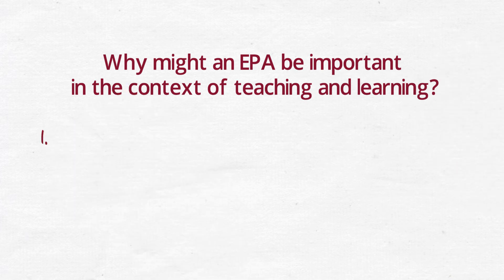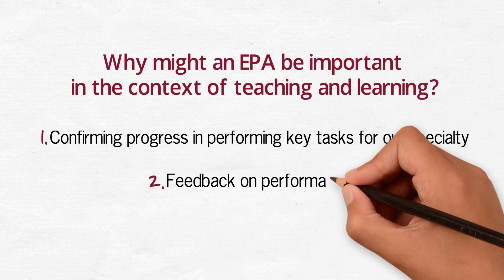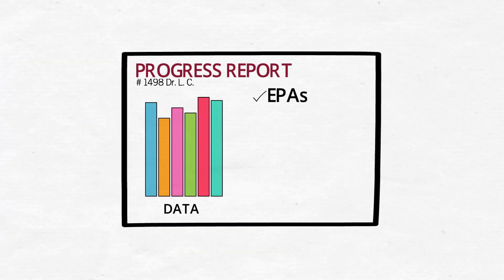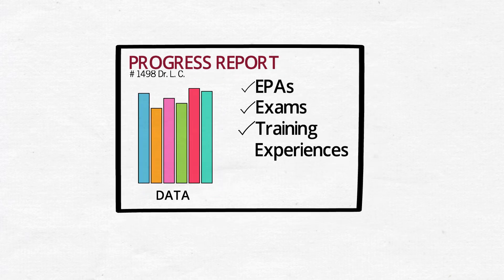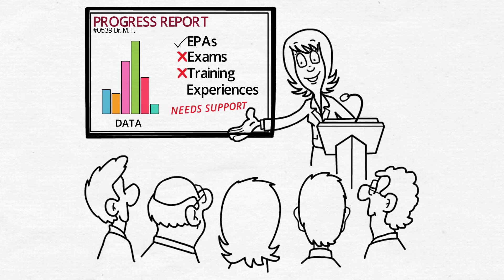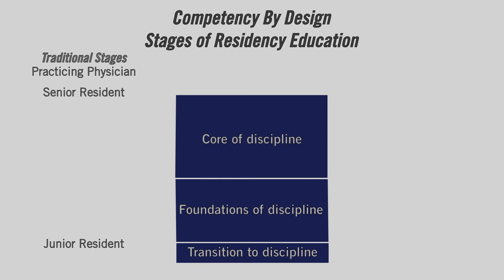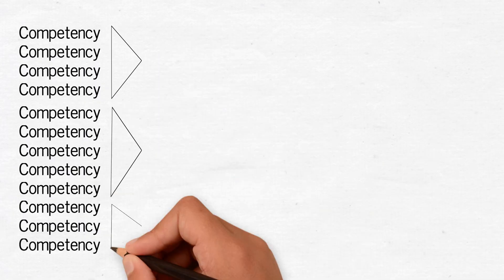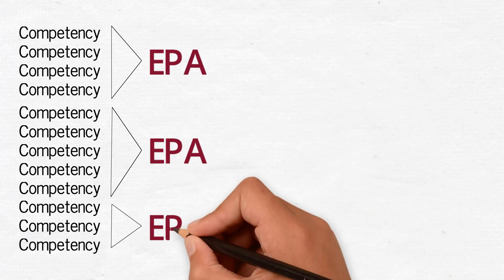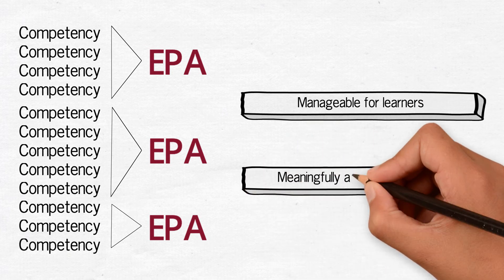So it's something on which a learner could both be observed and assessed. Why might an EPA be important in the context of teaching and learning? Two reasons: one, confirming progress in performing key tasks of our specialty, and two, for feedback. In CBD, we want to be sure that each resident can competently perform key tasks. By tracking them, our competency committee will have information to confirm who is making progress as expected and to identify early on if someone is needing more support in a given area. Residents are to achieve, and teachers are to ensure, that the EPAs are achieved by the end of each stage of training. An EPA represents the integration of a large number of competencies into a manageable number of activities for learners, and also for supervising faculty to meaningfully assess during the training program.